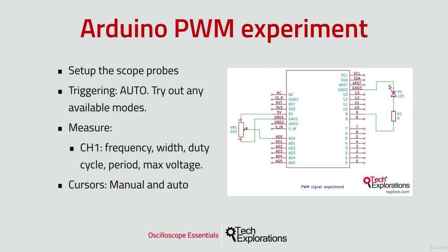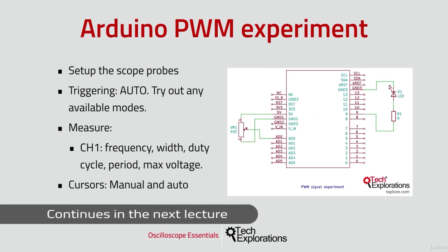We'll look at the frequency, width, duty cycle, period, and the max voltage of the sample PWM signal. We'll take measurements on the fly and see them change as we change the signal's duty cycle using the potentiometer. We'll also play with the cursors, especially in automatic mode, and see how they adjust when the signal changes. Let's start.